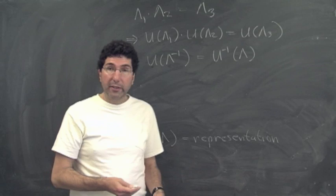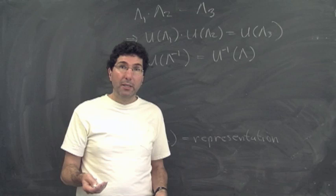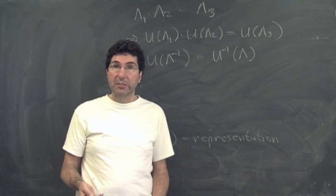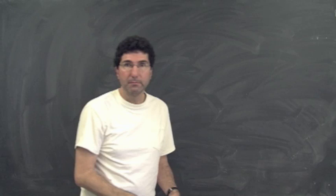The particle states we've been discussing form a unitary representation of the Lorentz group. This language is useful because you can mathematically classify all unitary representations of the Lorentz group — this was done by Wigner, and we'll discuss it later in the course. You can show that these representations are labeled entirely by mass and spin, so we can understand what all possible relativistic particles look like.